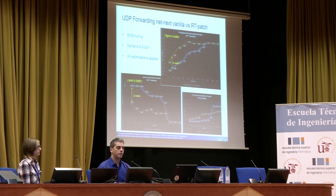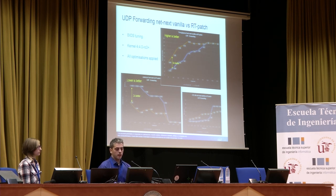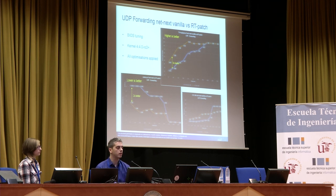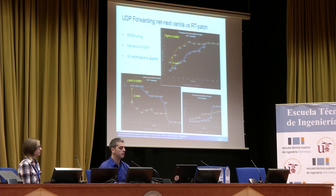Because we were using NetNext, we had to port the RT patch to the NetNext branch, which required some effort. Once we could start benchmarking, the findings were actually very positive. In terms of throughput for small packet sizes below 700 bytes, the RT patch provides 3x better performance versus a standard kernel.